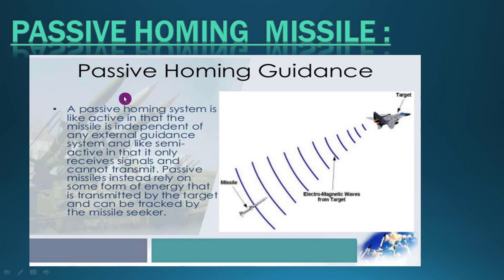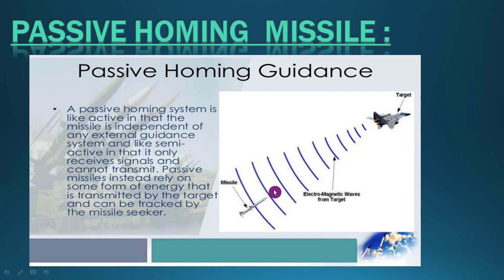Passive homing guidance missiles have only an infrared seeker. The seeker detects infrared rays or heat emitted from the target, follows that heat source, and hits the target. Because it relies on a seeker, any larger heat source or electromagnetic wave radiator nearby can confuse and divert the missile away from its intended target.